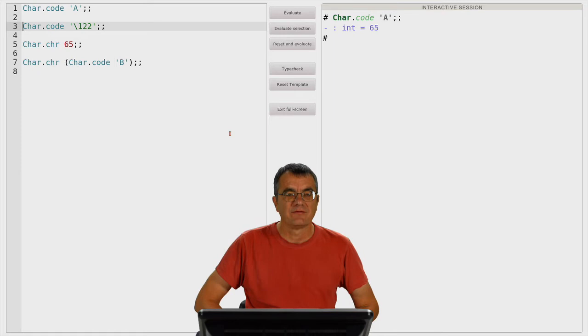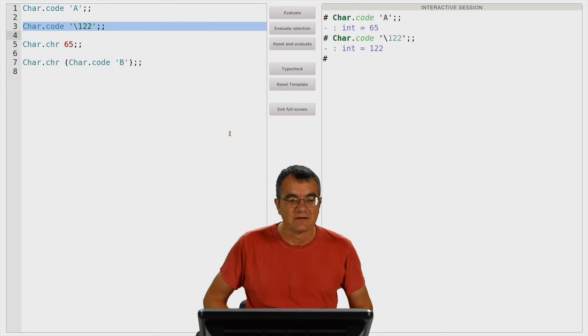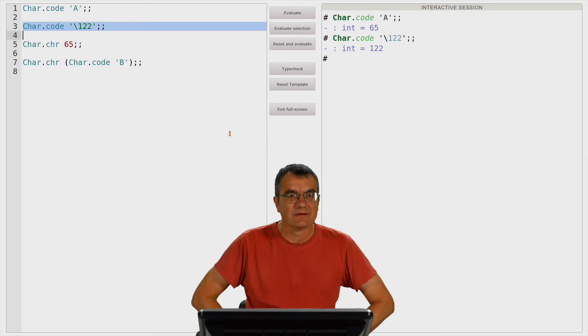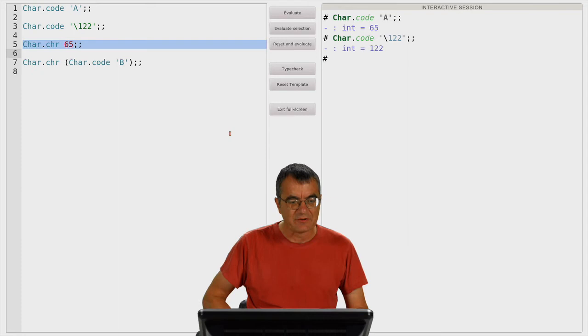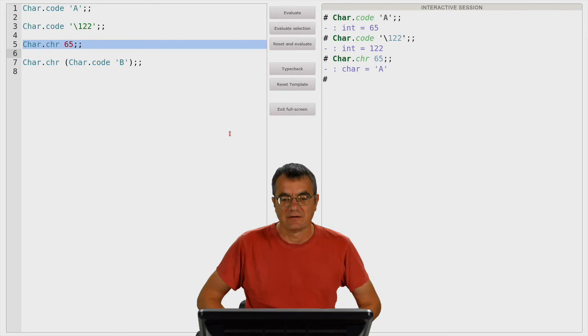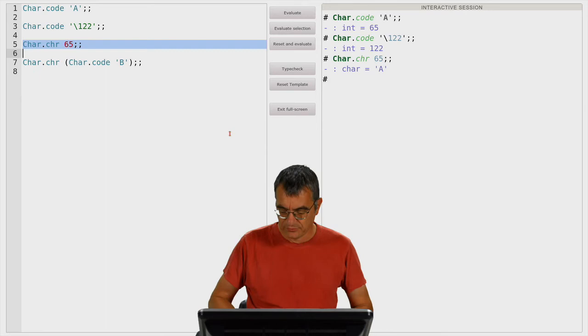We might also convert in the other direction, so taking an integer code and convert it into a character, as you can see on the next example, with Char.chr. And this is again our letter A in capital. And finally, the last example demonstrates that, in fact, the two conversion functions, Char.chr and Char.code, are in fact inverse to each other. So when we go in one way and then back again, we obtain precisely the same value.